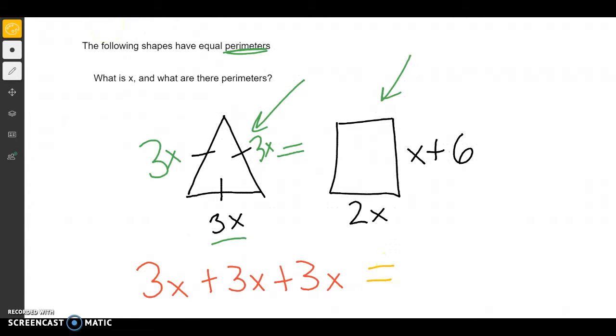And we're going to find the perimeter the same way. Well, in a rectangle, this side is equal to this side, so that's 2x. And this side is equal to this, so that's x plus 6.